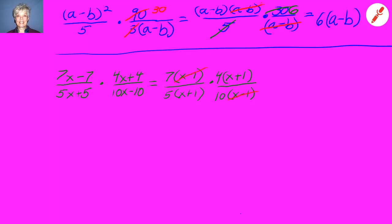Now the x minus 1's cancel, the x plus 1's cancel. Two goes into four two times and two goes into ten five times. So our numerator now is going to consist of seven times two and the denominator will be five times five. All the variables are gone.